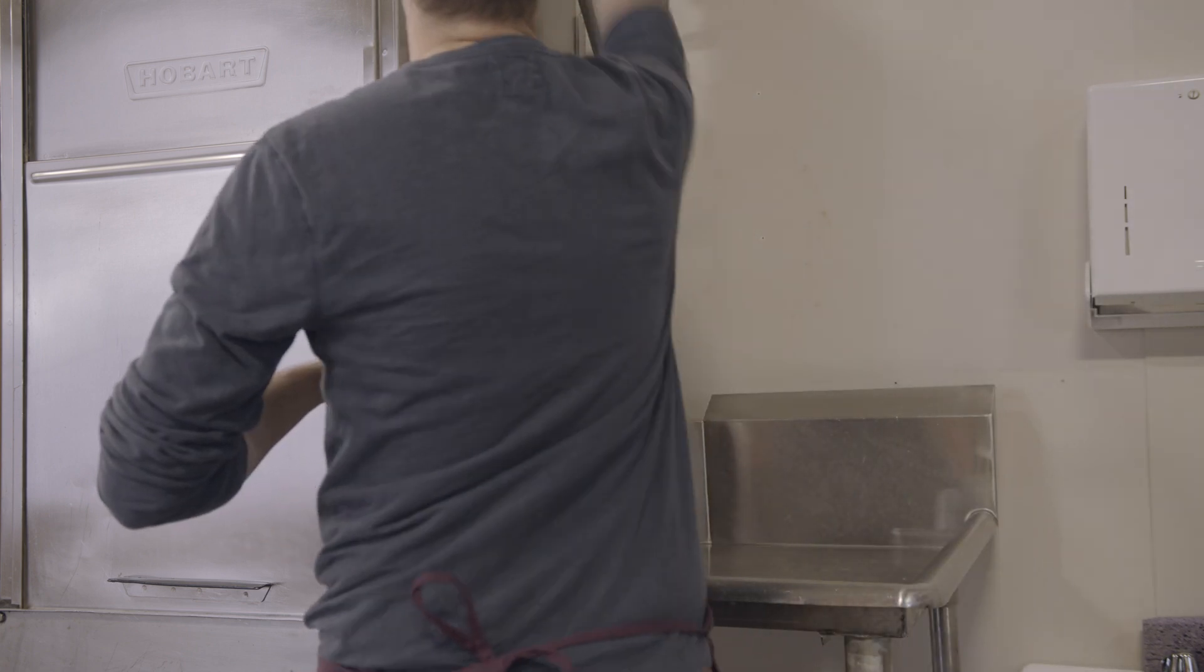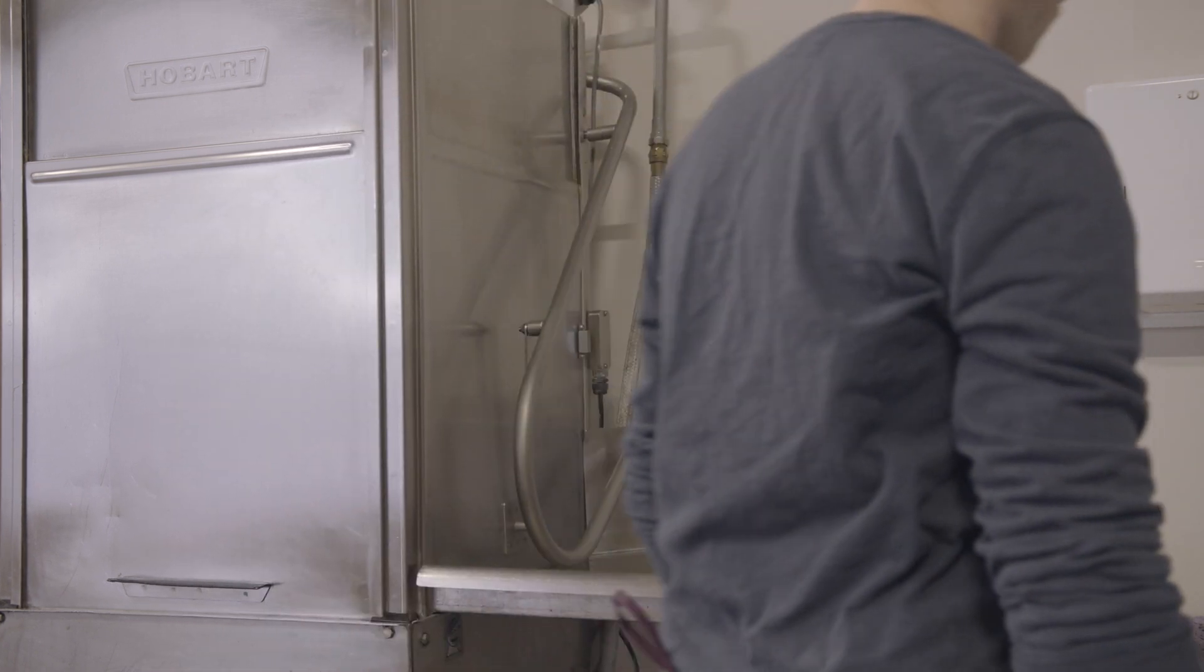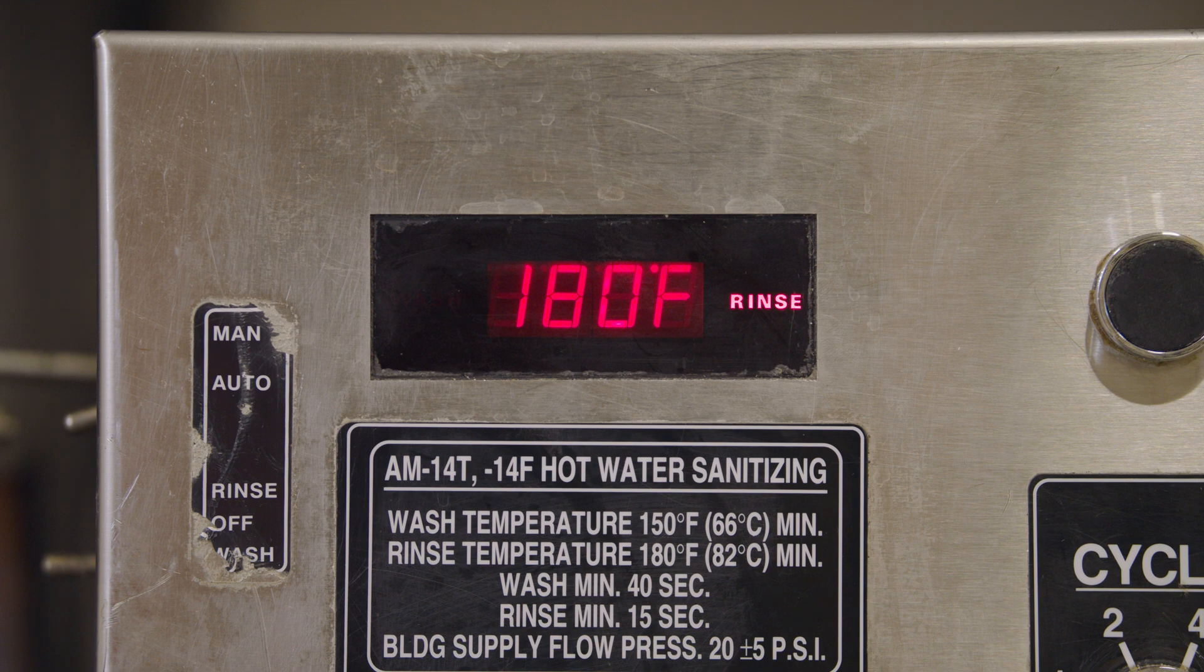Next, we run the machine's cycle as normal. The temperature sensitive square will turn black as the temperature is reached. You can observe this occurring when your machine reaches the rinse portion of its cycle.